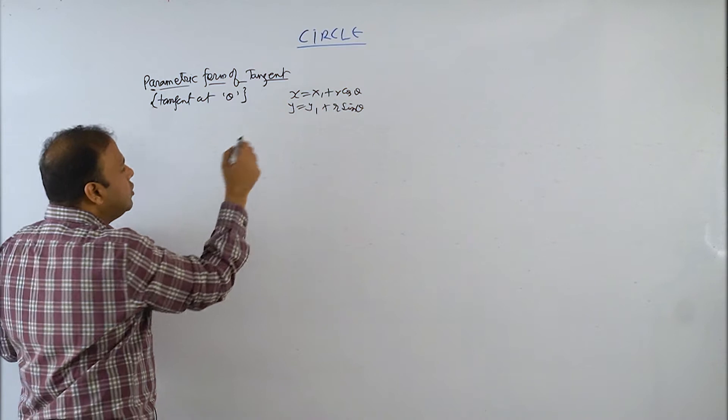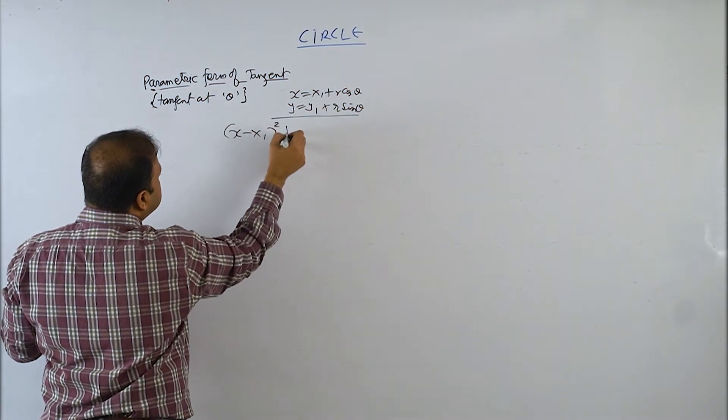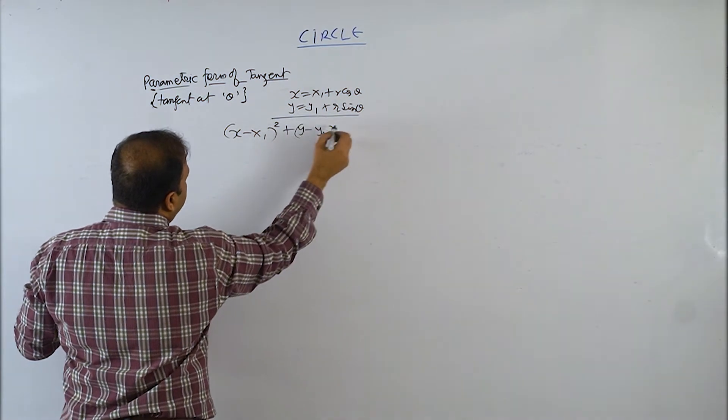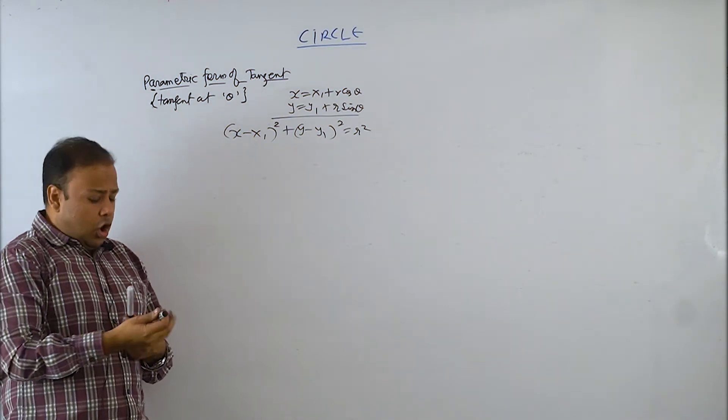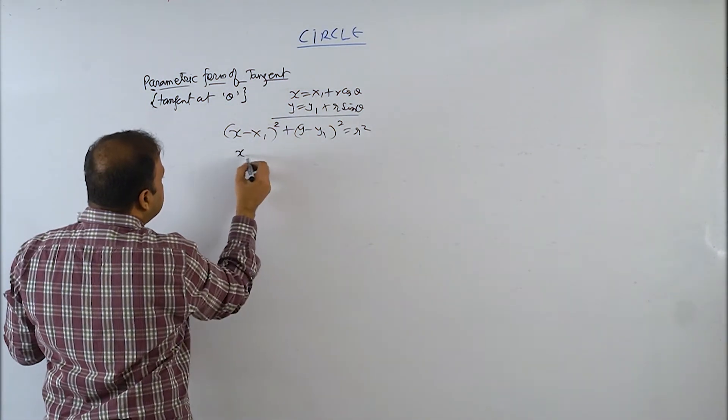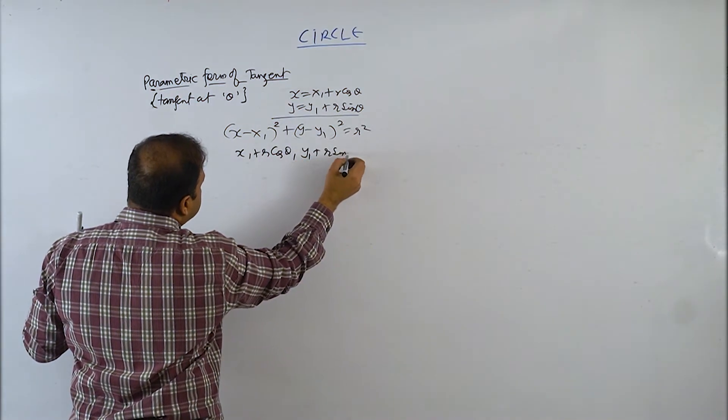This circle is called x1 plus r cos theta, y1 plus r sin theta.